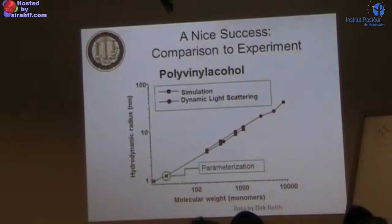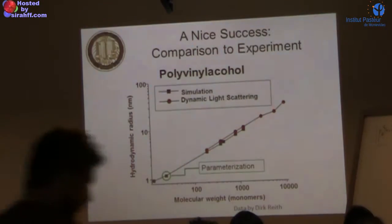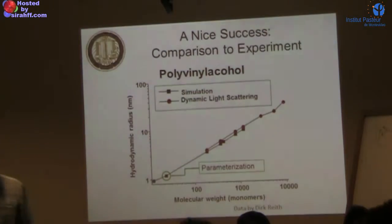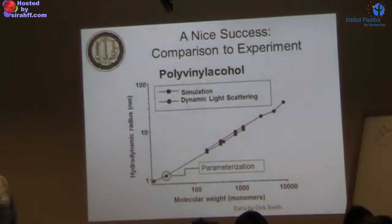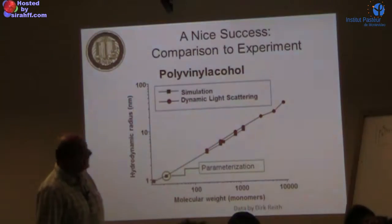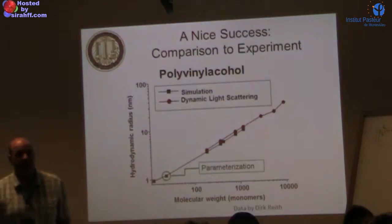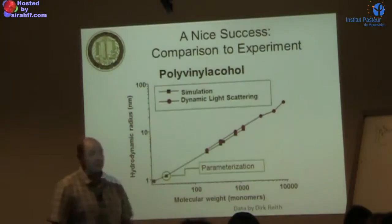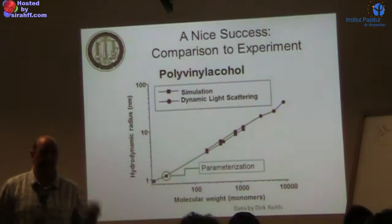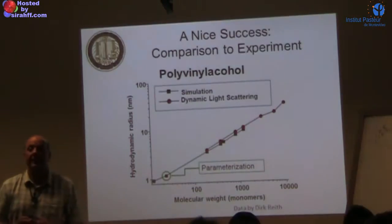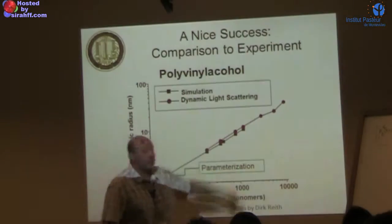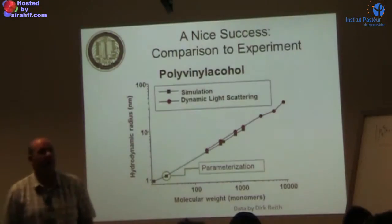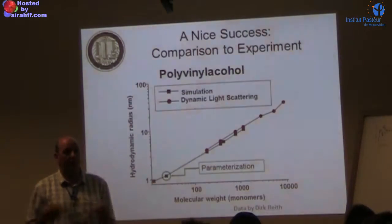This is an example taken from the work on polyvinyl alcohol in water — a solution system. The simulation was trained on a PVA chain in water, and then the strength of IBI is that you can increase chain length. They went from a short oligomer up to thousands of monomers, determined the hydrodynamic radius, and compared against dynamic light scattering experiments.